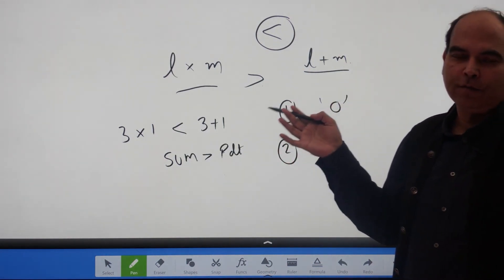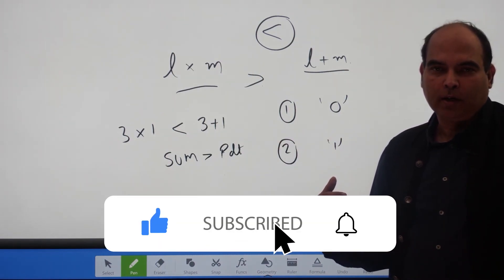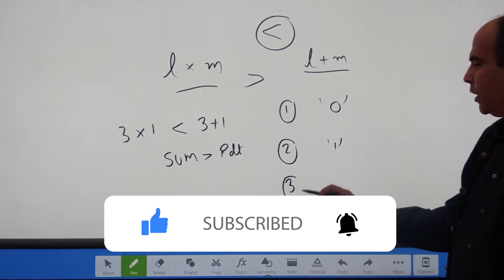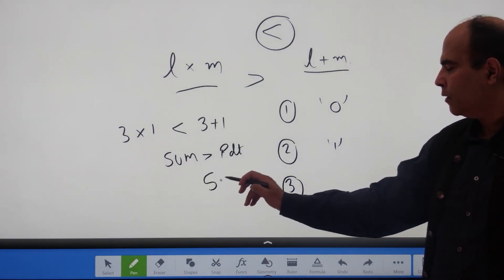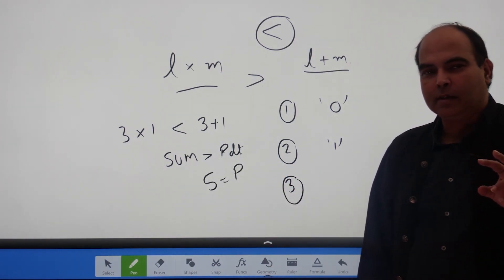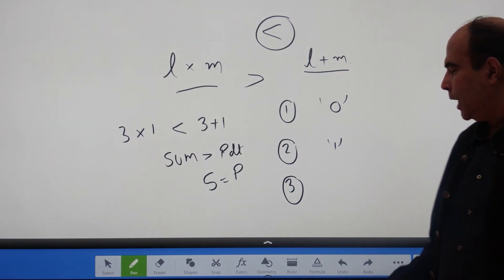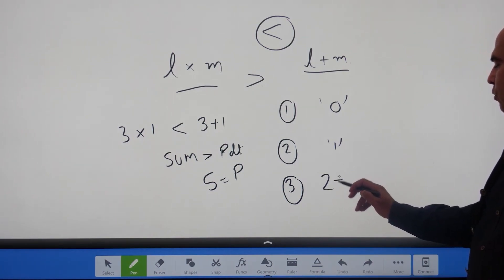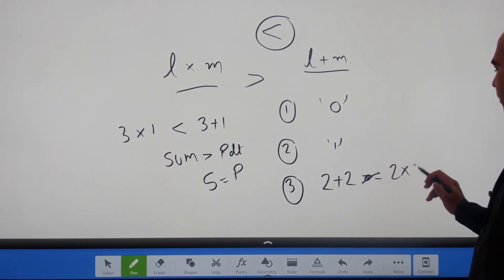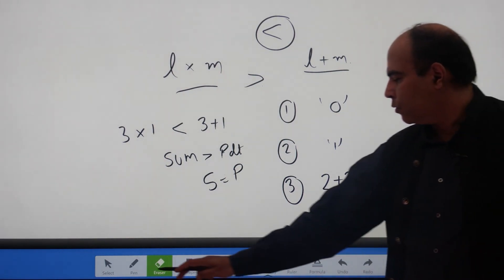The second condition where sum can be greater than product is when any one of the numbers is 1. For example, 3×1 is not greater than 3+1, because multiplication by 1 gives the same number while addition of 1 increases it by 1. The third condition is a specific case where sum equals product — and this is the only case in numerical analysis where that happens: 2 + 2 = 2 × 2. Both equal 4.